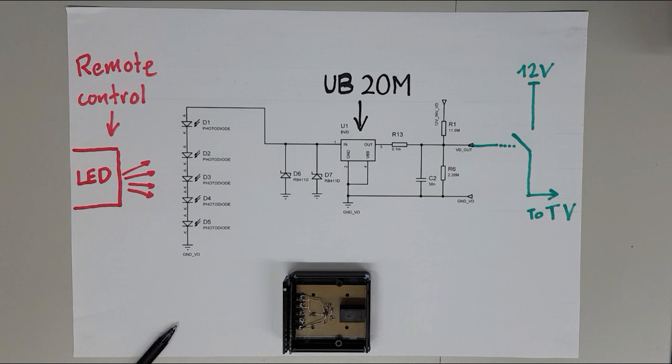This leaves only the sub-100 picoamp leakage through the output of the voltage detector chip. The zener diodes in this circuit are there to provide a bit of leakage so that the input of the detector does not stay charged once the infrared signal disappears.